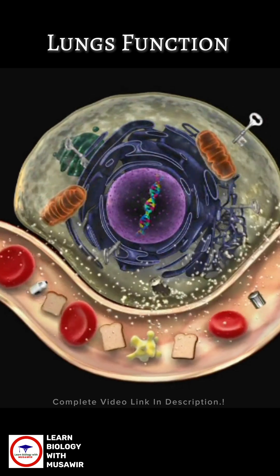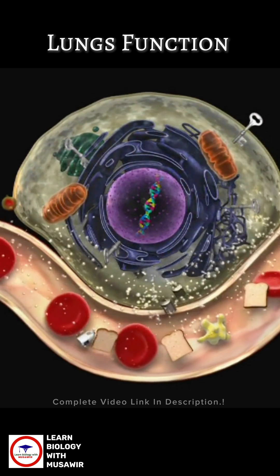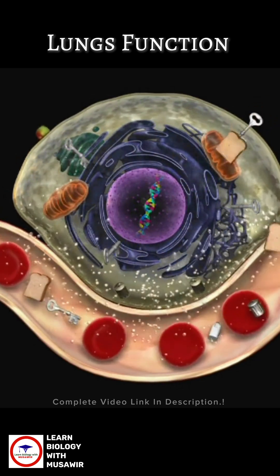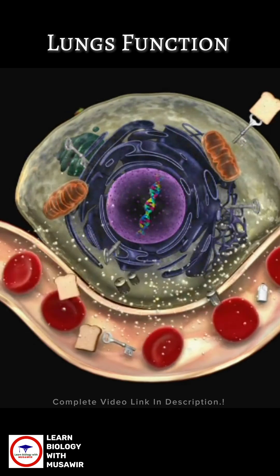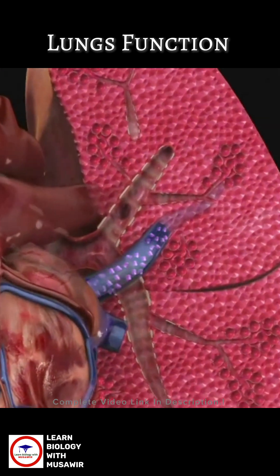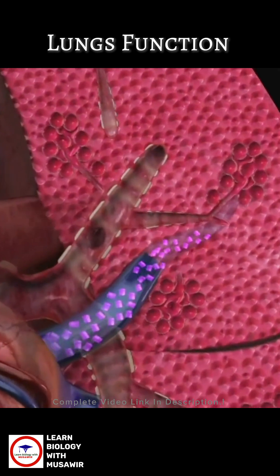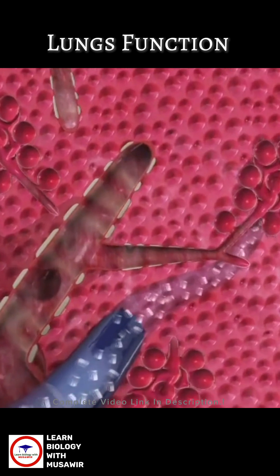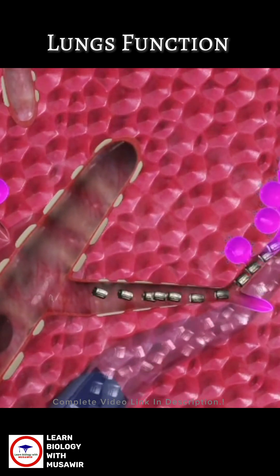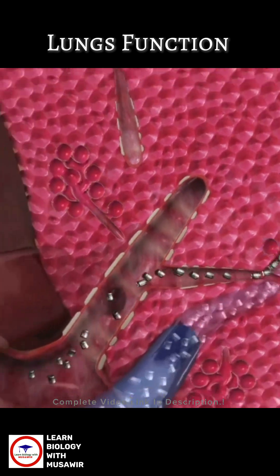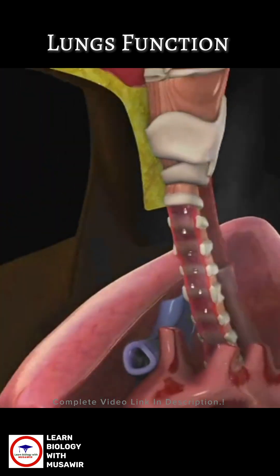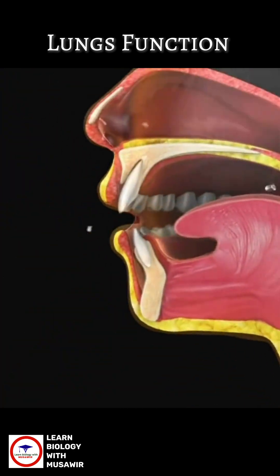As the cells take in the oxygen, they get rid of their waste in the form of carbon dioxide. The carbon dioxide travels in the blood back to the lungs, enters the tiny air sacs, and travels back up the airways and is breathed out. Let's take a look.